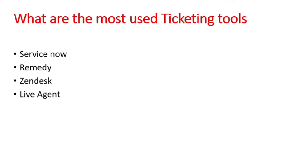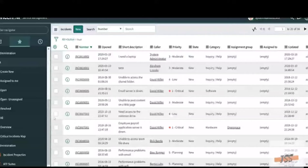The most commonly used ticketing tools are ServiceNow, Remedy, Zendesk, and LiveAgent. Apart from these, there are many other ticketing tools available in the market. I'm going to show the interface of the ServiceNow ticketing tool. On the left side you can see options called Create New, Assign to Me, Open, Open Unassigned, Resolved, All, Overview, Critical Incidents, and Map.